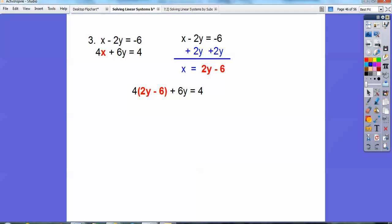All right, and then distribute the 4 through, and then combine like terms, you guys. 8y plus 6y is 14y. 14y minus 24. Okay, and whoops, I didn't do that. There we go. And then we're going to add 24 to both sides, and we're going to get 28. So we're going to end up getting y equals 2.